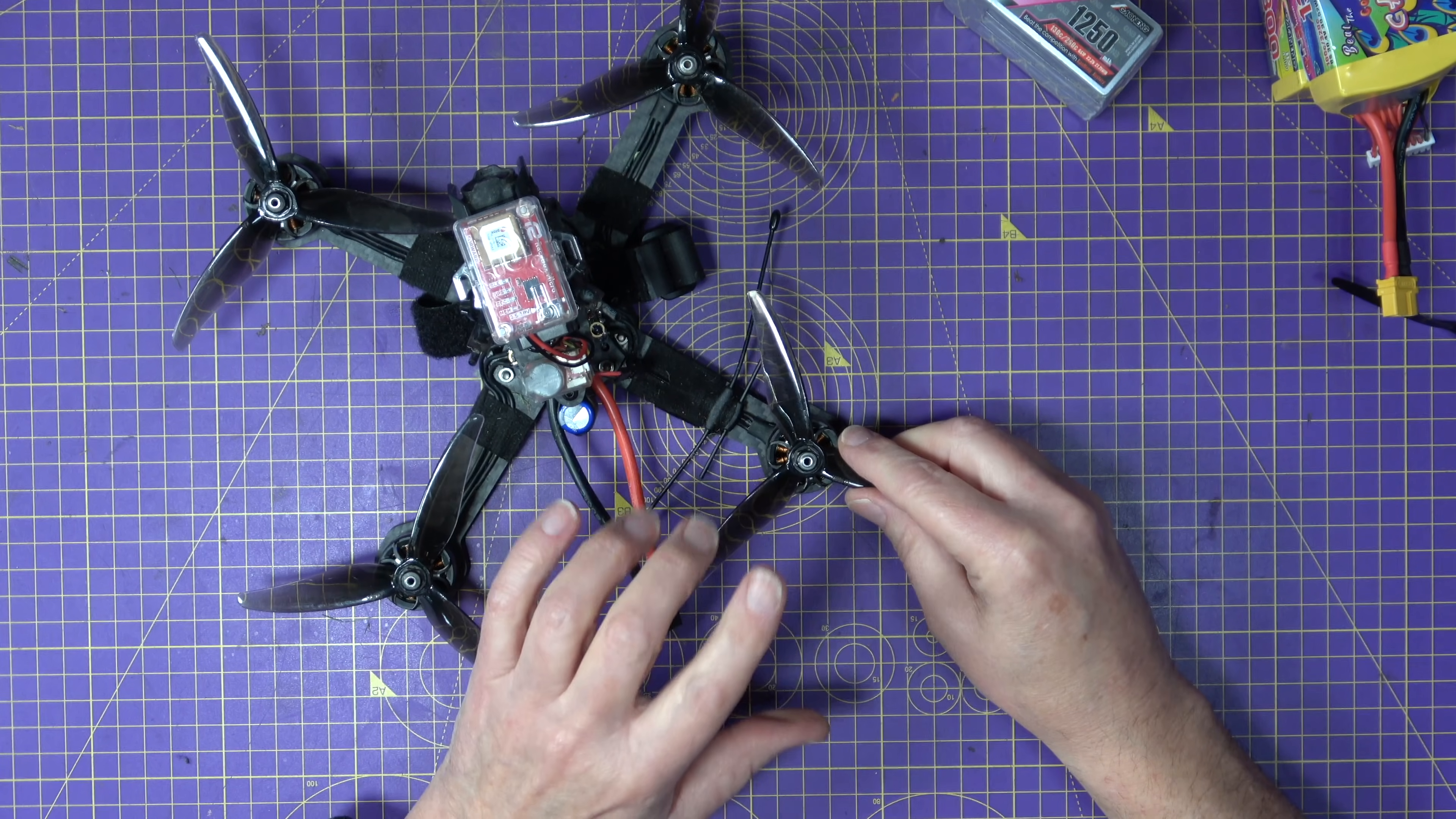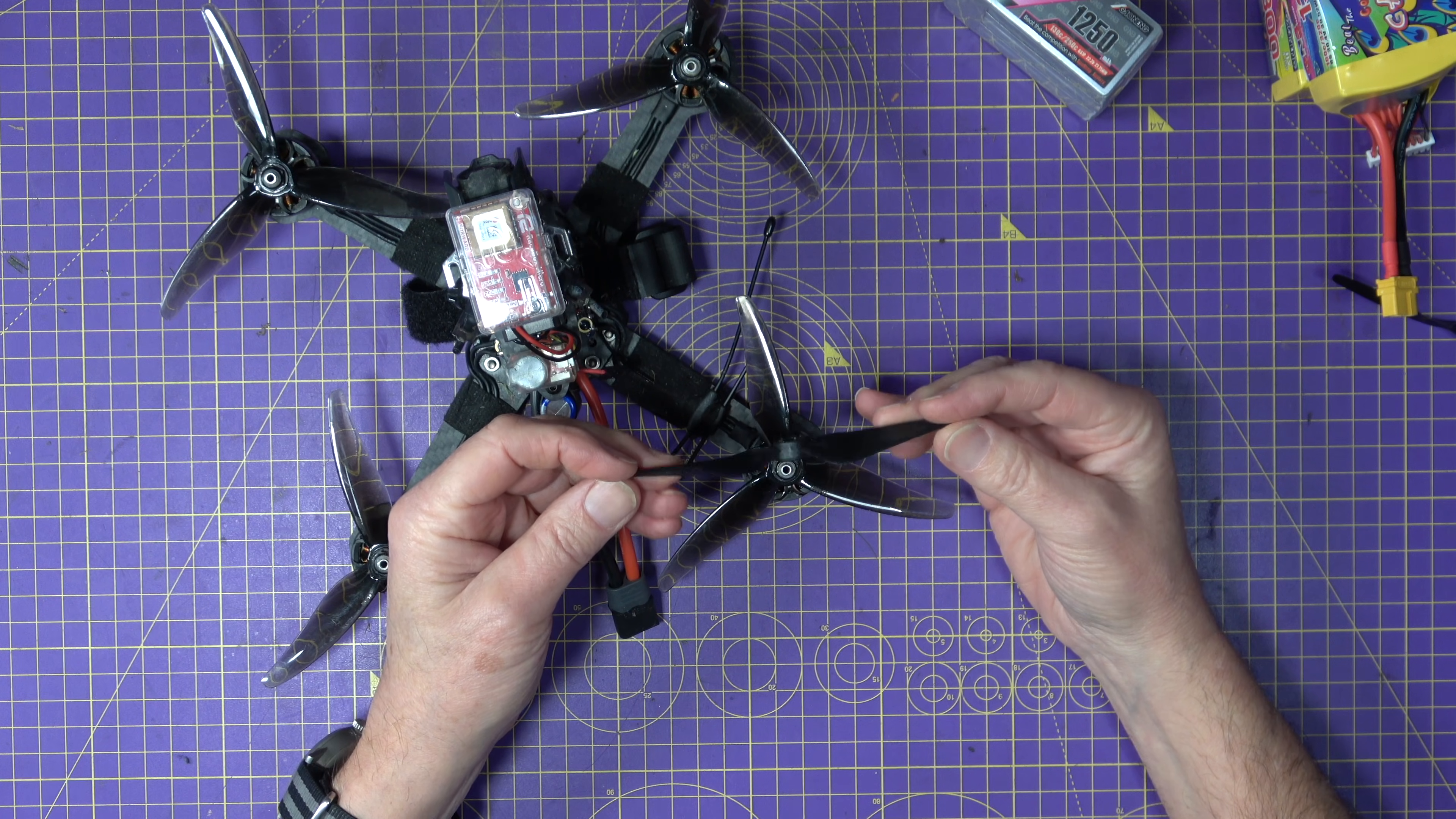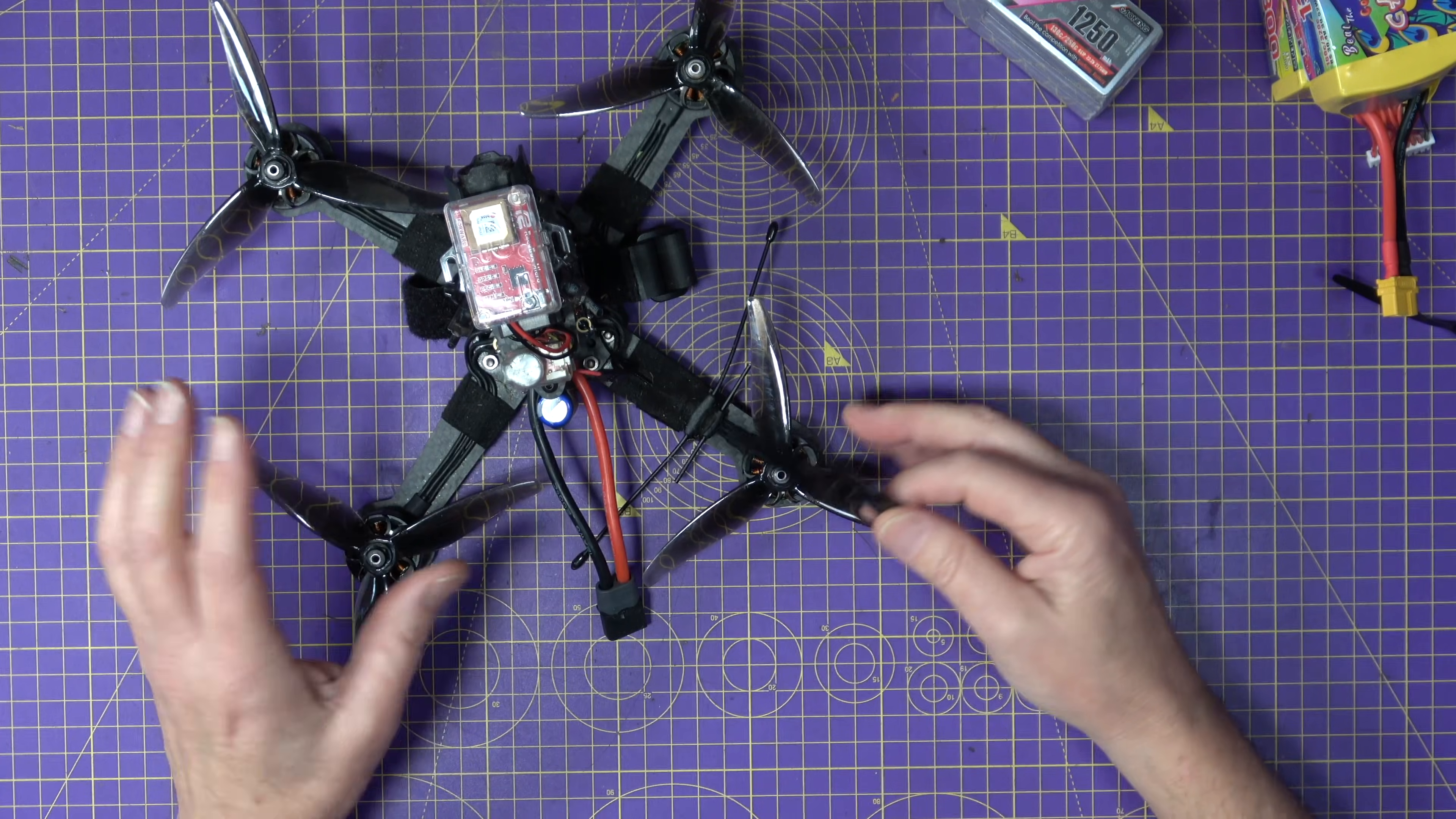So I tested this using these Gemfan Hurricane 51466 V2 tri blades which have got a fair amount of pitch on them and these things which I had lying around they're HQE Wings F01 5E bi blades and I suspect they will give the battery and the drivetrain a bit of a hard time. But I didn't want to spend weeks number crunching hunting for those unicorn props. These are about right and quite honestly the data will tell the whole story.